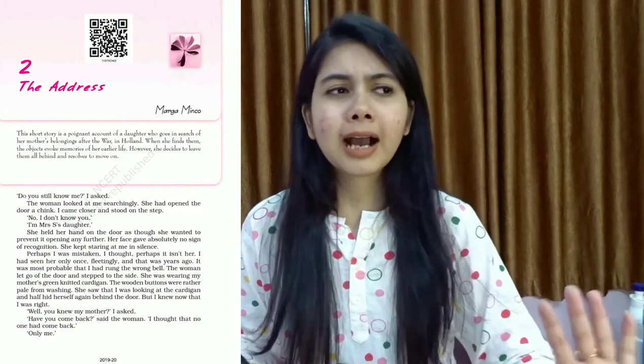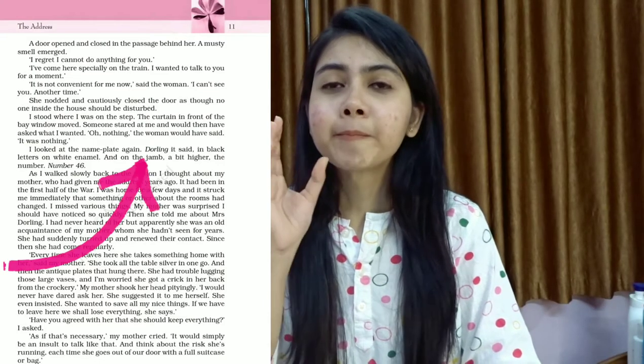She thinks: 'I don't have my mother right now, but at least I will get all my mother's belongings here.' However, Mrs. Dorling refuses to speak to her, saying she is very busy and will talk later, and closes the door. The narrator is left wondering — she knows this is the right place — but the lady is not letting her in. She then starts recalling memories in a flashback. The house number is 46, so she knows the address is number 46, Mrs. Dorling's house.